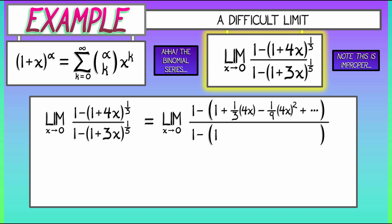In the denominator, we have 1 minus quantity 1 plus one-fifth times quantity 3x, and then one-fifth times negative four-fifths divided by two factorial. That's negative two-twenty-fifths times quantity 3x squared, and then a whole bunch of other terms. Now, notice, we have some cancellation going on. Those ones, those all go away.